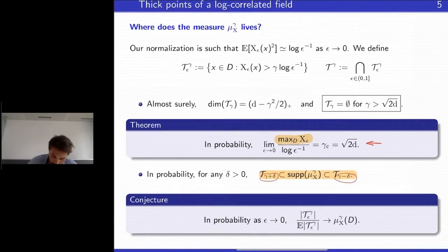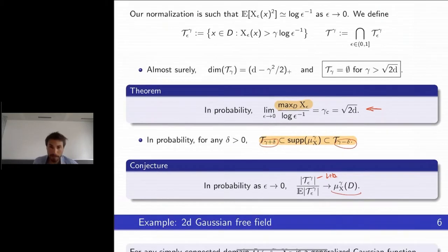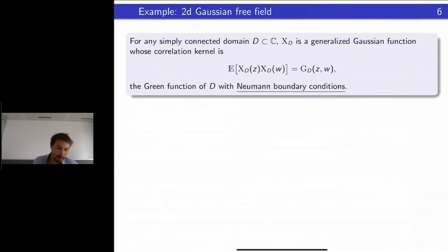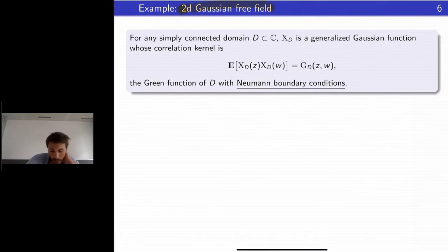The main example I want to discuss, and why I focus on 2D, is the two-dimensional Gaussian Free Field. I imagine many of you have heard of it, so I will give a definition and explain where you can think about it. The point is that if you have a simply connected domain in the plane, you can associate to it a generalized Gaussian function — generalized in the sense that it is a random distribution.